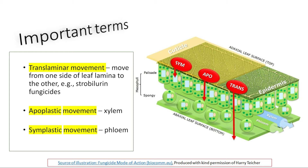There are some terms we must know to understand the mobility of fungicide inside the plant. Trans-laminar movement means the fungicide molecule moves from one side of the leaf lamina to the other side. For example, if strobilurin fungicides are applied on the upper surface of the leaf, the fungicide molecules will move to the lower surface of the leaf. That is called trans-laminar movement — movement across the leaf lamina. Trans-laminar movement is shown by strobilurin fungicides, which is why they are called locally systemic fungicides.